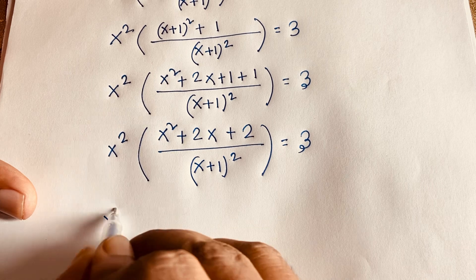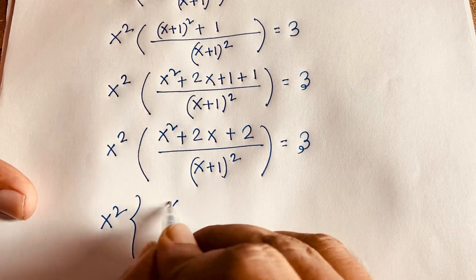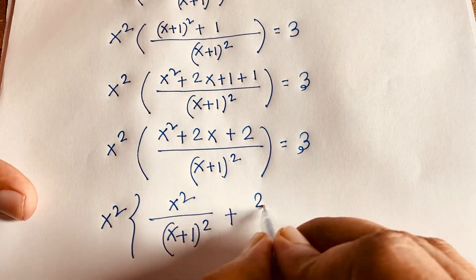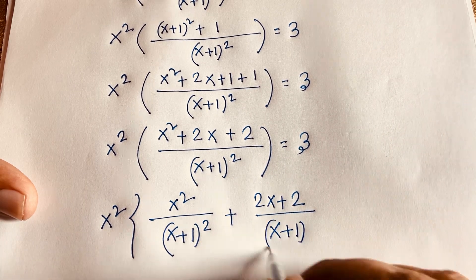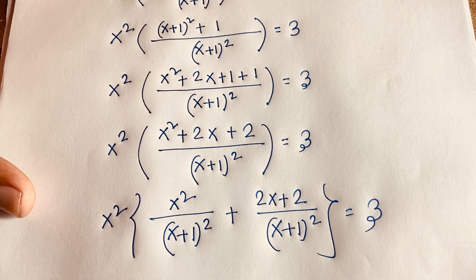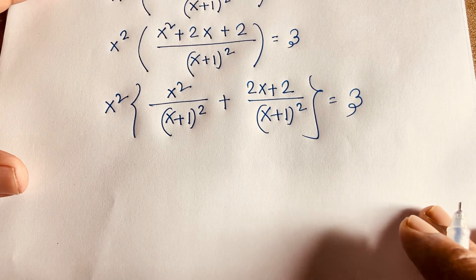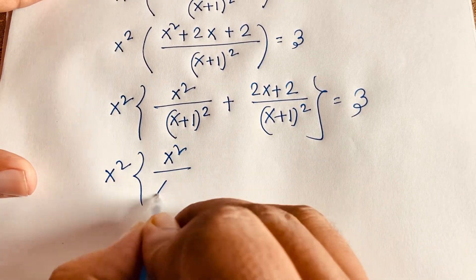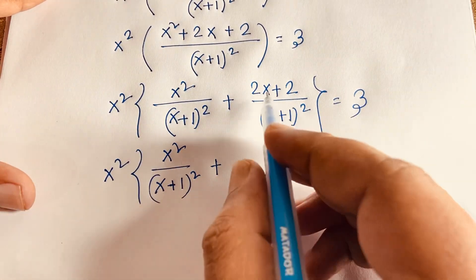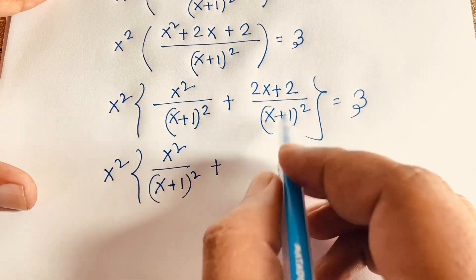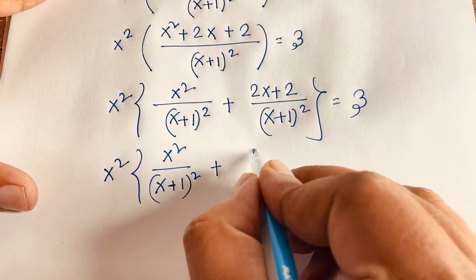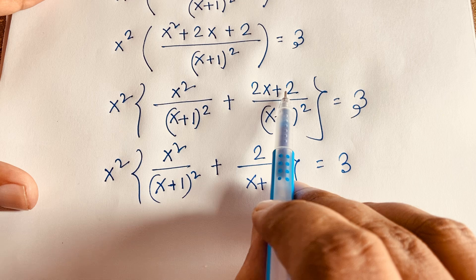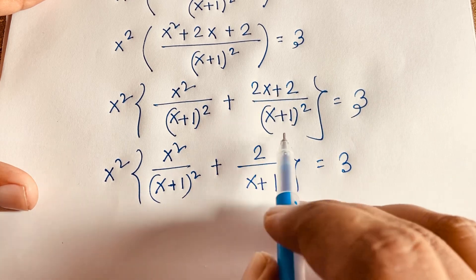Expanding further, the equation becomes x squared times x squared over (x+1) squared, plus 2x plus 2 over (x+1) squared, equals 3. Since 2 is common in the numerator 2x+2, we factor: 2(x+1) divided by (x+1) simplifies to 2 over (x+1), giving us a cleaner form.